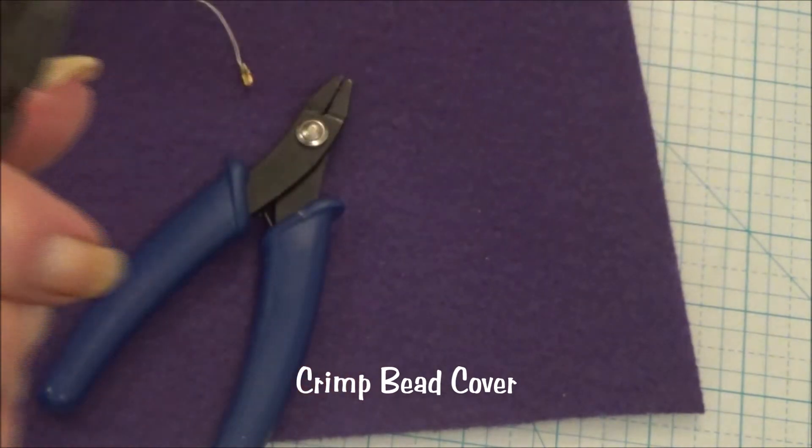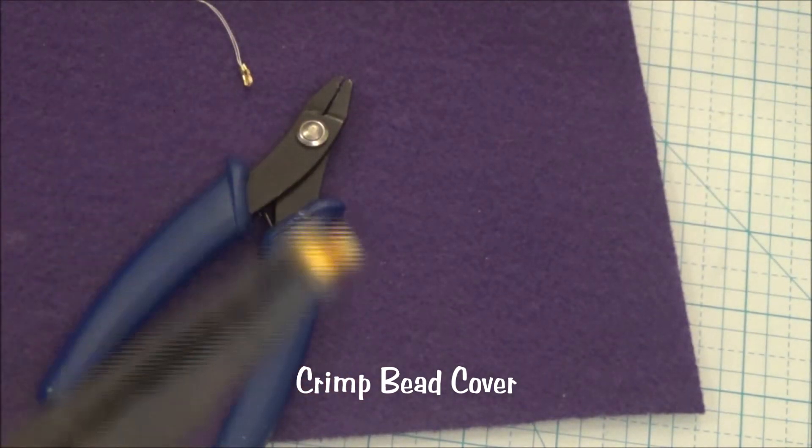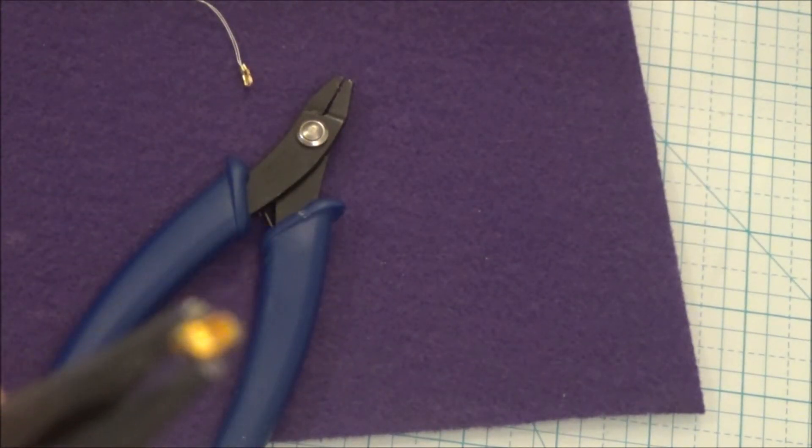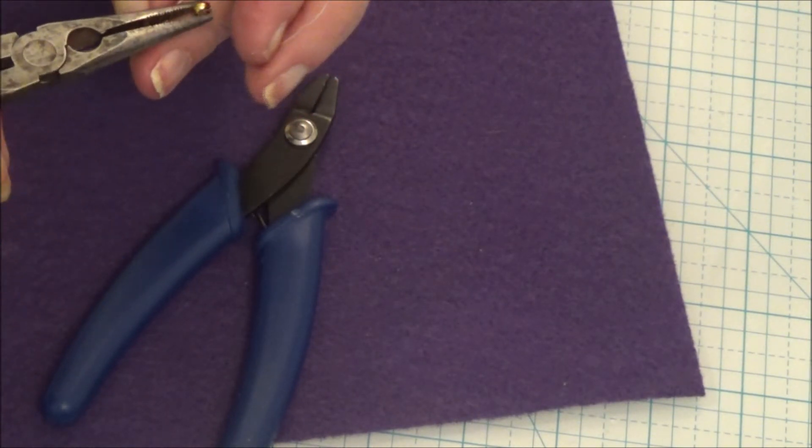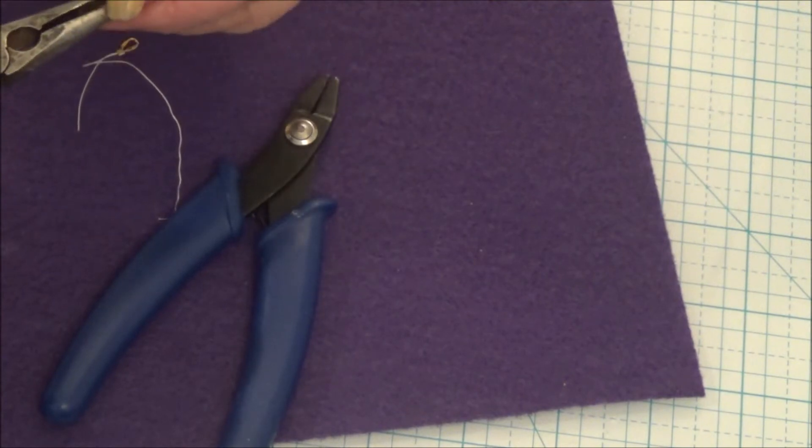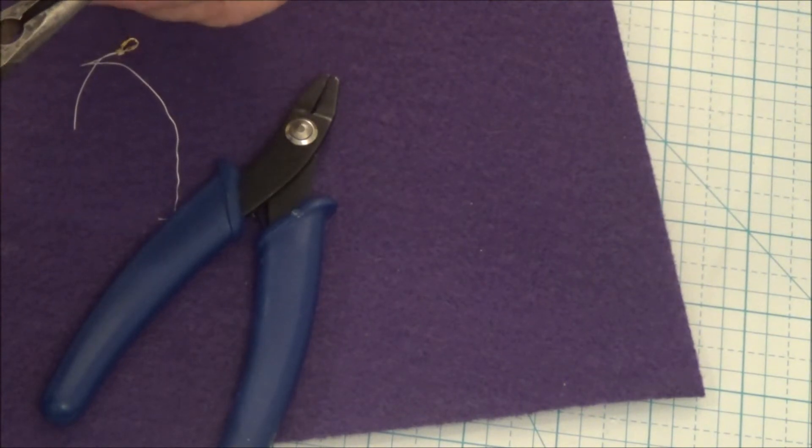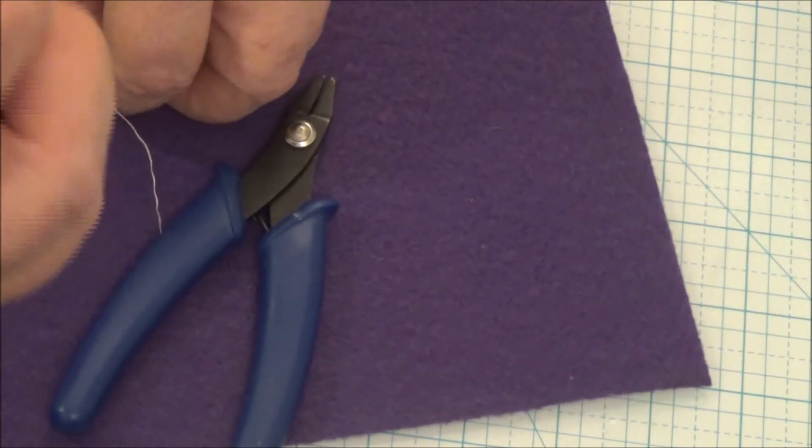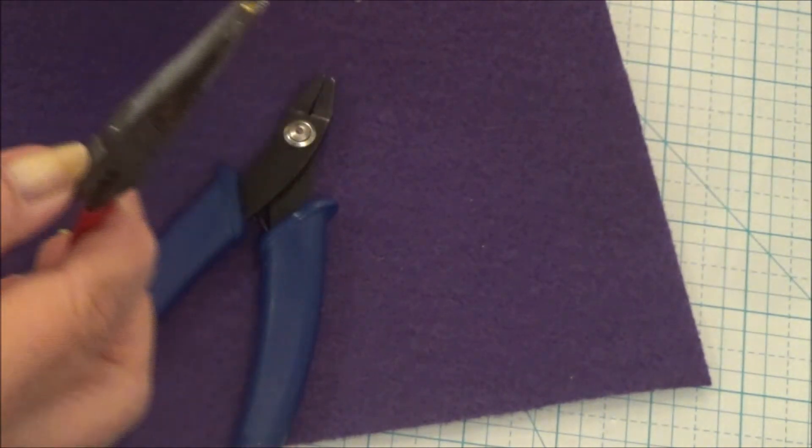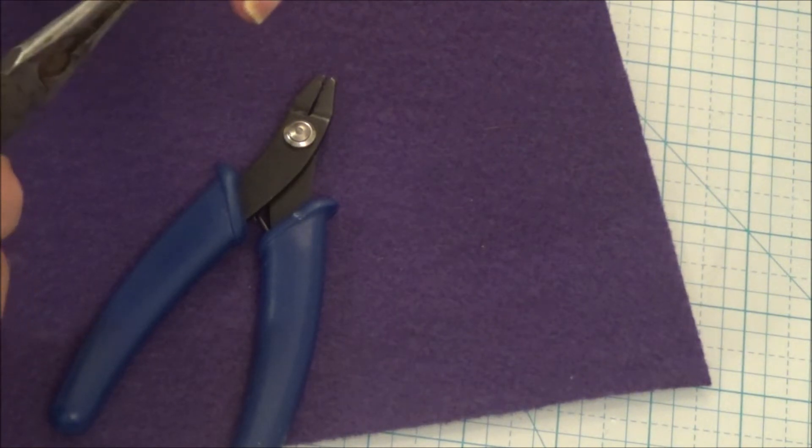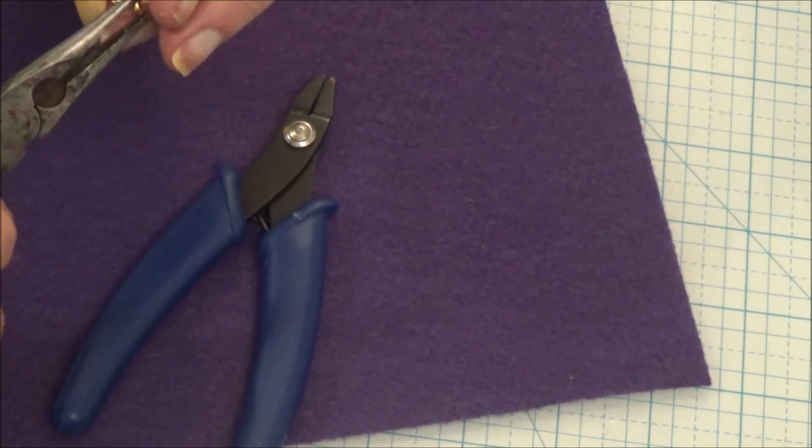Now I'm going to take my crimp cover. And this again is like a hollow open bead. And slightly push it. Get the crimp bead cover in your pliers side by side. Side on one side and side on another. So you can put your crimp bead in there and squeeze it. Slightly.